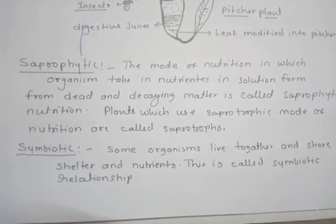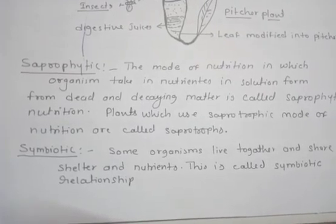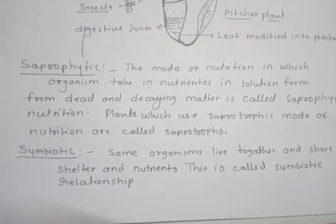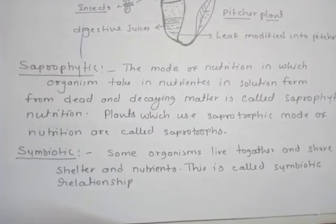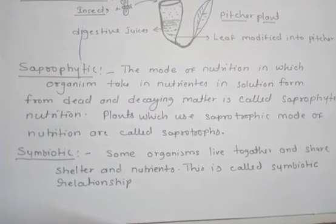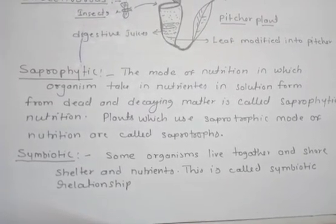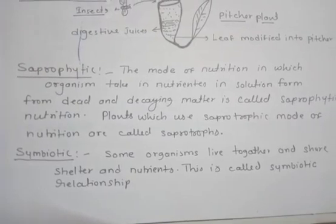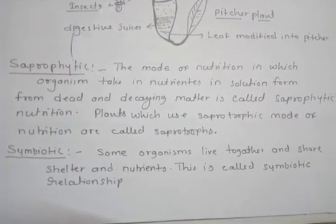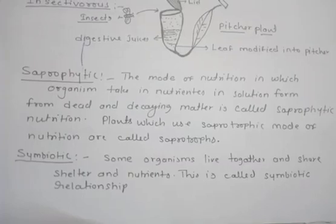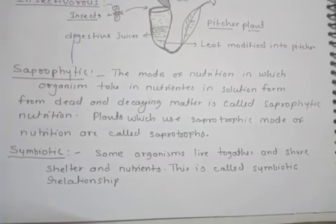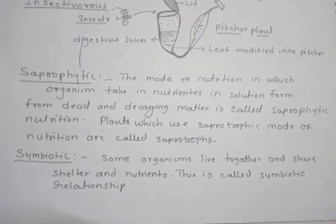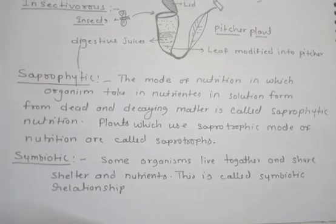One more example is the organism called lichen, which lives in association with fungi and algae. The fungus provides shelter, water, and minerals to the algae, and in return the algae provides food prepared by photosynthesis. It is just like your best friend — when you need something your friend helps you, and when your friend needs something you help them. This is symbiotic association.